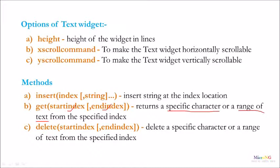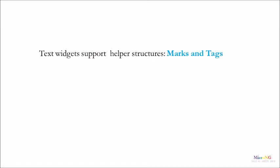If only the starting index is mentioned, it will delete only one character. If starting and ending index are both mentioned, it will delete all the characters from the starting to the ending index. The Text widget also supports different helper structures like marks and tags. This is generally used to mark or tag a particular area of the Text widget so that different kinds of editing can be done on different areas of the content.